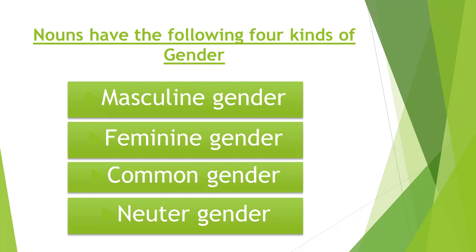And if we are talking about both male and female, then that will be common gender. Neuter gender is the one that doesn't refer to any specific gender — it is either living or non-living.